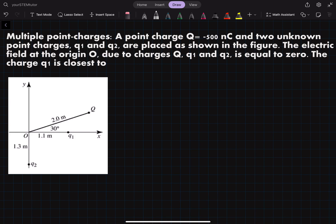The electric field at the origin O due to the charges Q, q1, and q2 is equal to zero and it wants us to find the charge for q1 or the approximate charge for q1.